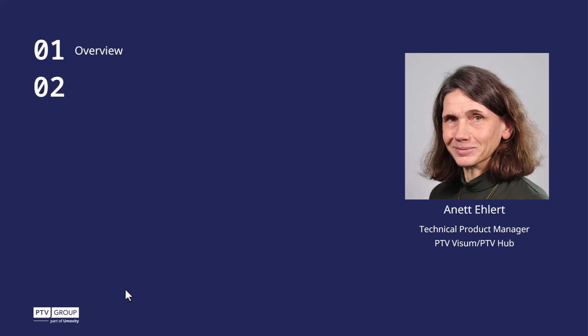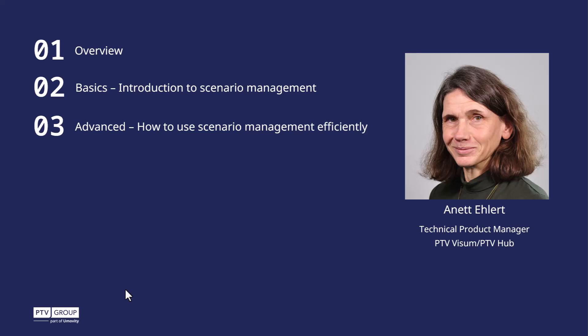Part two starts with the basics including how to create a scenario management project, how you can define variations of a version file that represents the scenarios, and how you calculate these scenarios. In part three we look at some more advanced topics with regard to modifications and computation. Part four has a focus on scenario results — we look at KPIs, comparisons of scenarios, and presenting results of scenarios.